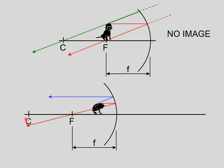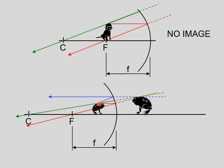Those reflected rays clearly are not going to intersect, so we need to project the reflected rays — not the incident rays, the reflected rays — behind the mirror, and there is our image. If we were to have used rule number three, which says line up the top of your object with the center of curvature, head towards the mirror, and bounce back along that line, you can see that we would get pretty much the same answer.